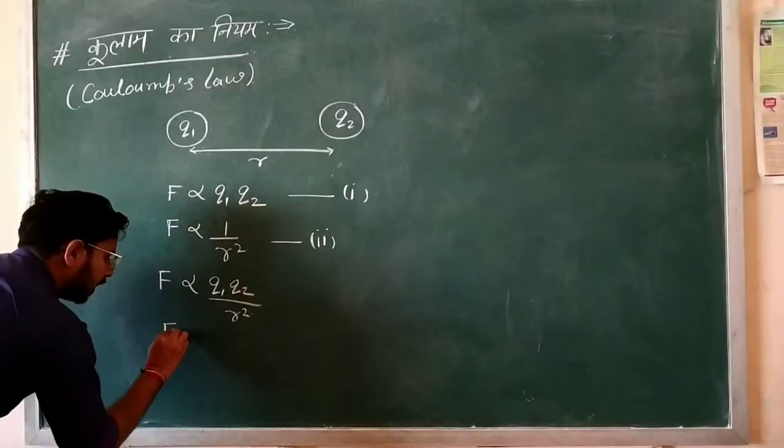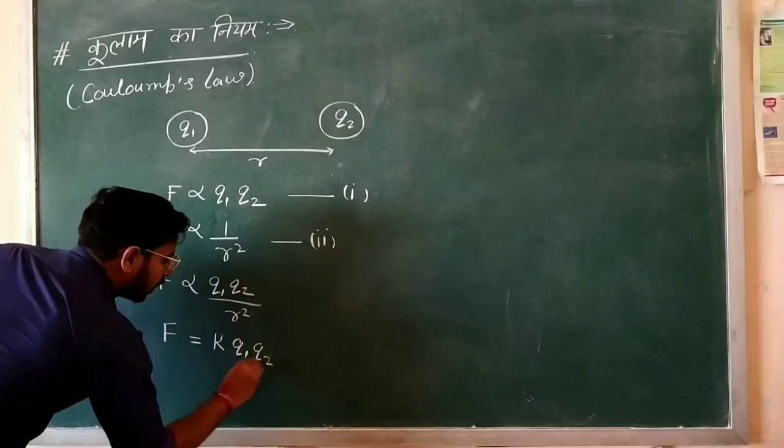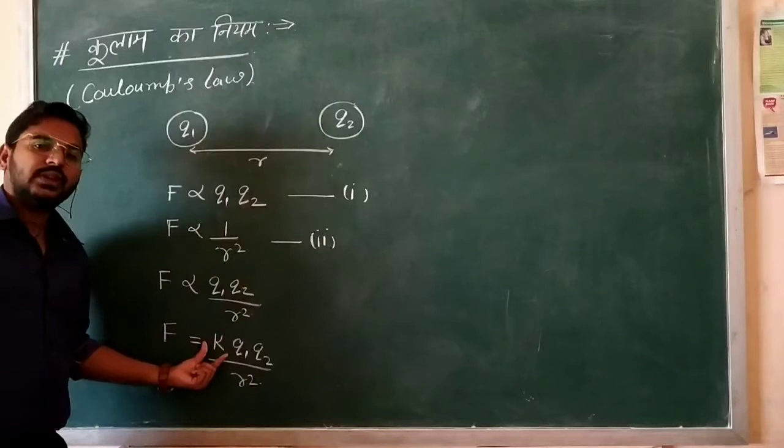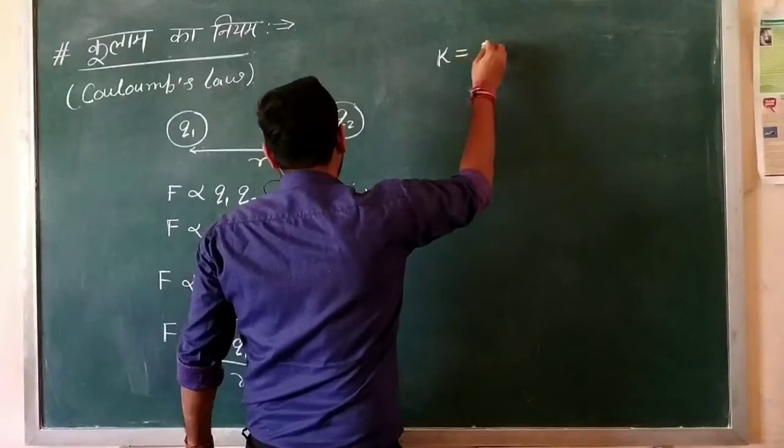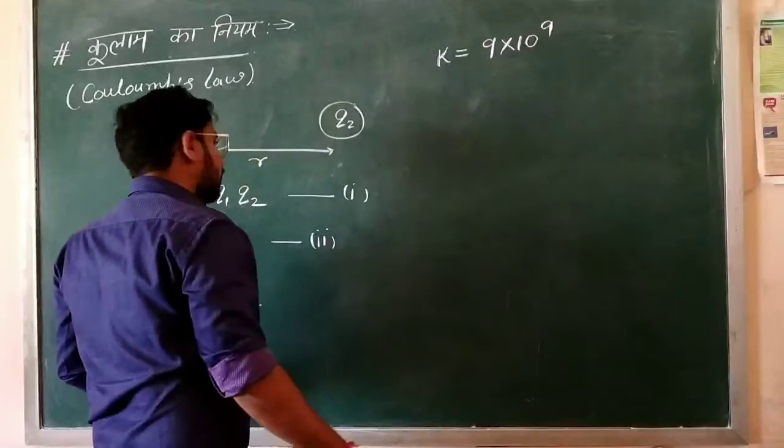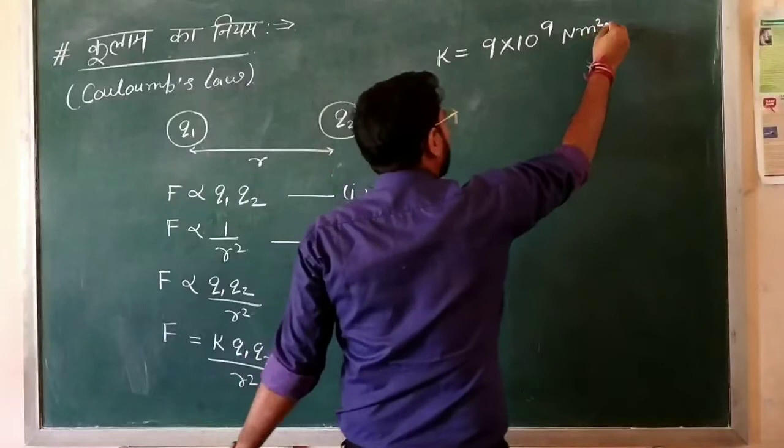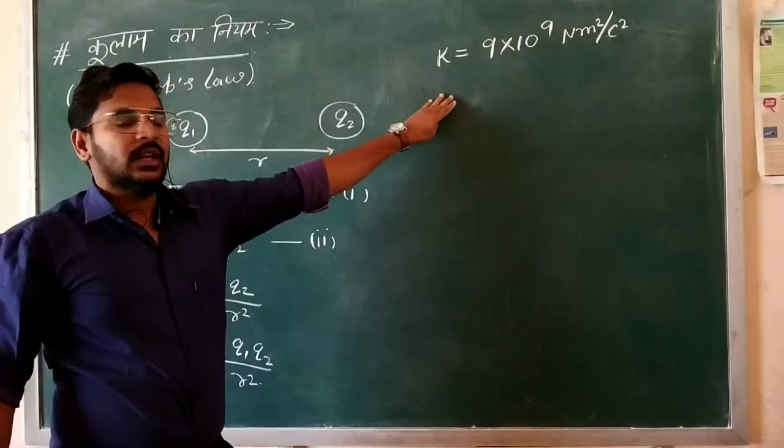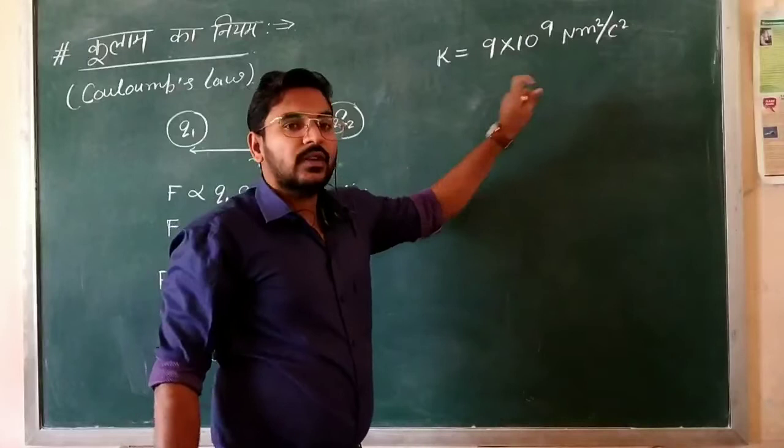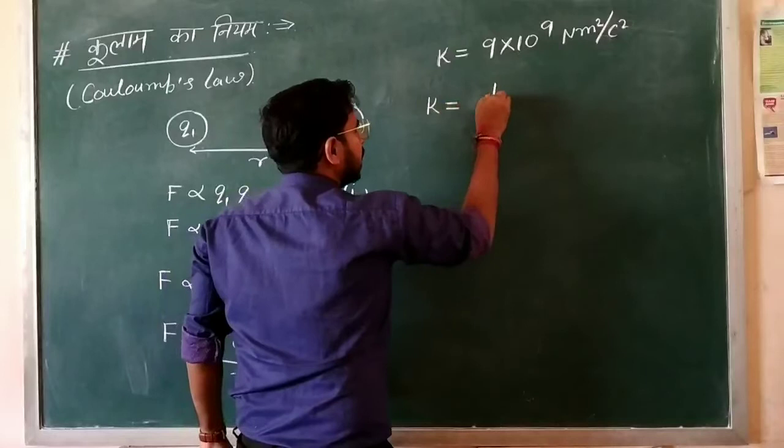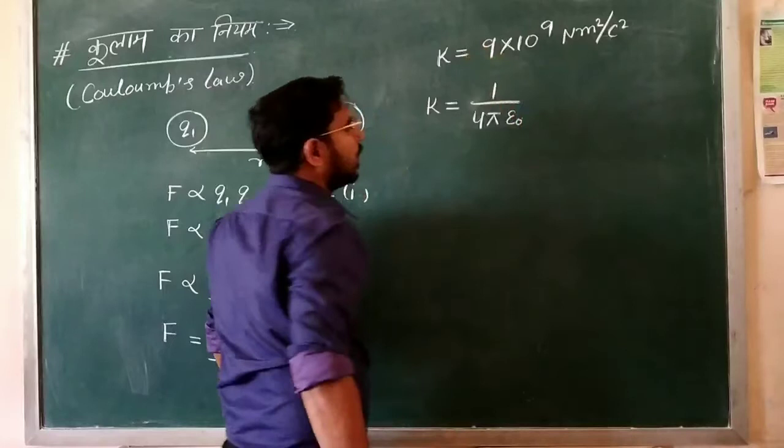For the relationship between epsilon values, epsilon 1 squared to epsilon 2 squared equals 1 over epsilon squared. The constant K from Coulomb's Law equals 1 over 4 pi epsilon naught.